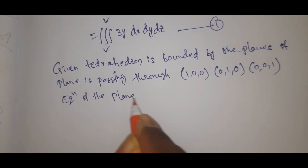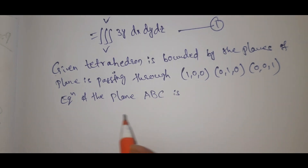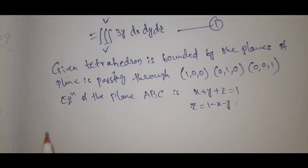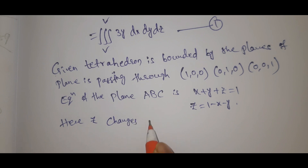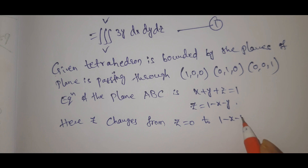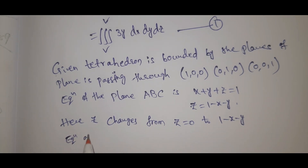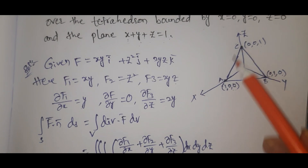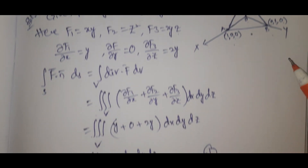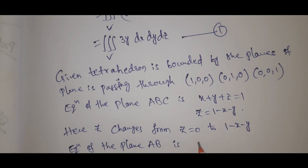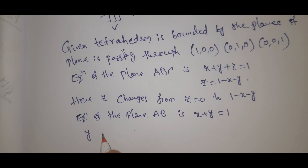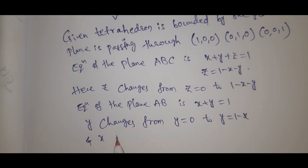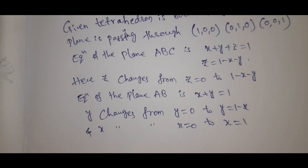Now we establish the limits. The equation of the plane ABC is x plus y plus z equal to 1, so z equals 1 minus x minus y. Z changes from 0 to 1 minus x minus y. The projection onto the xy-plane gives x plus y equal to 1, so y changes from 0 to 1 minus x, and x changes from 0 to 1.